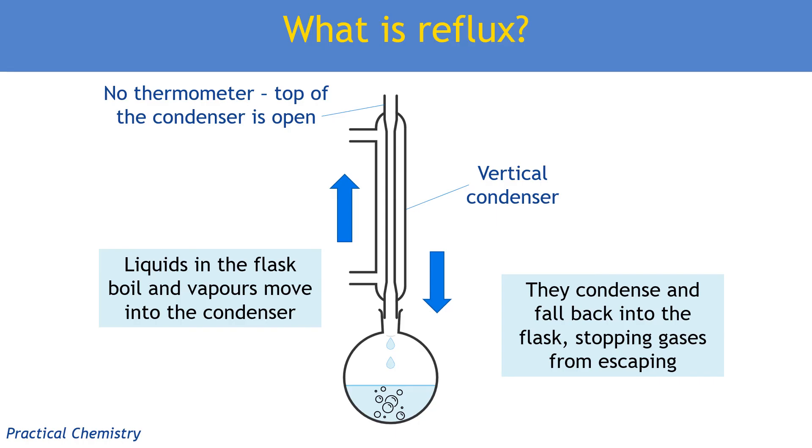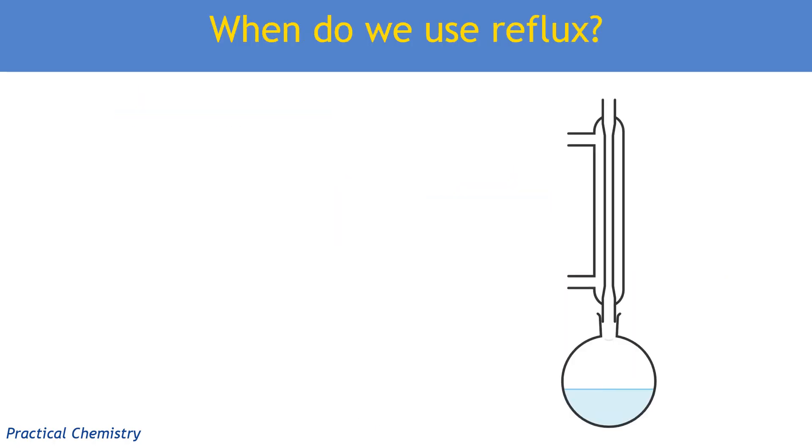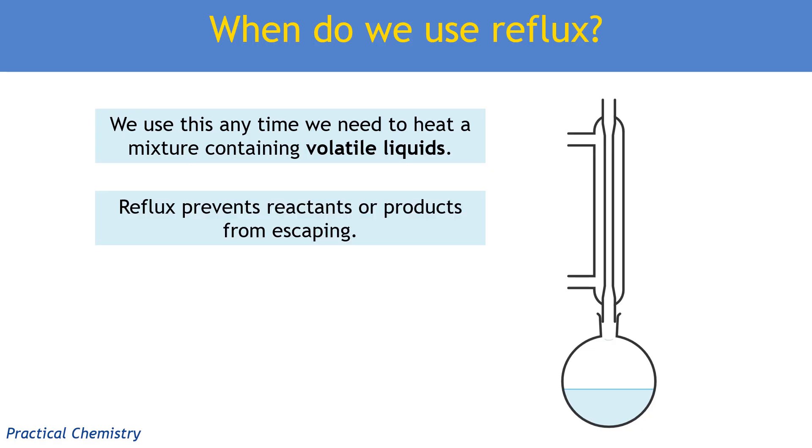We can't just put a lid on something and heat it. If it's going to be boiling, it's going to be producing gas, which is going to be producing a high pressure. So at the very best, our lid isn't going to stay on. And at the worst, our whole container could explode. So we've just kind of mentioned why we use reflux. We do it when we need to heat a mixture that contains anything that's going to turn easily into a gas. So volatile, low boiling point liquids, which includes basically most organic reactions include volatile liquids. So it's stopping our reactants or products from escaping.